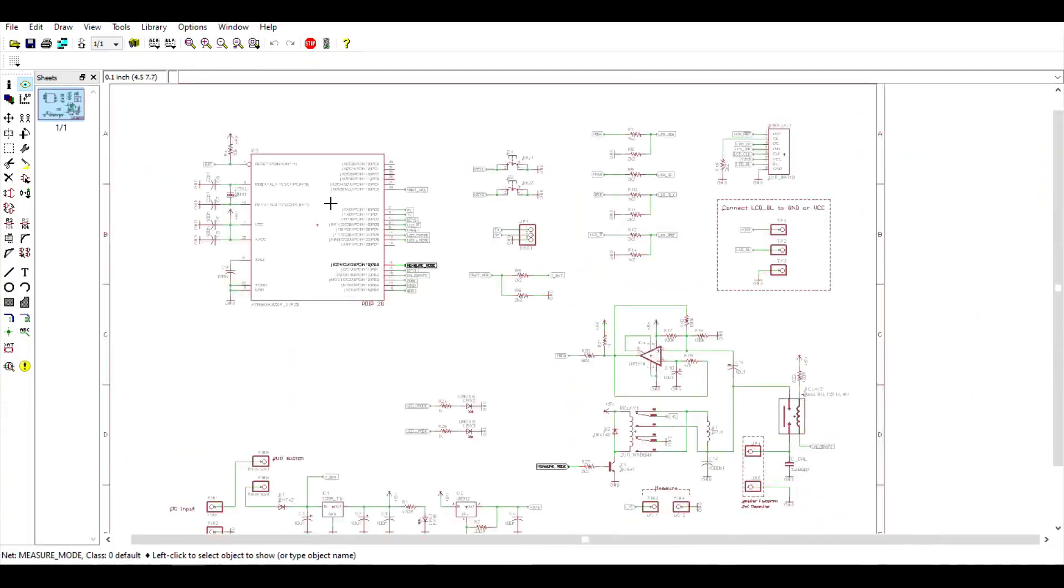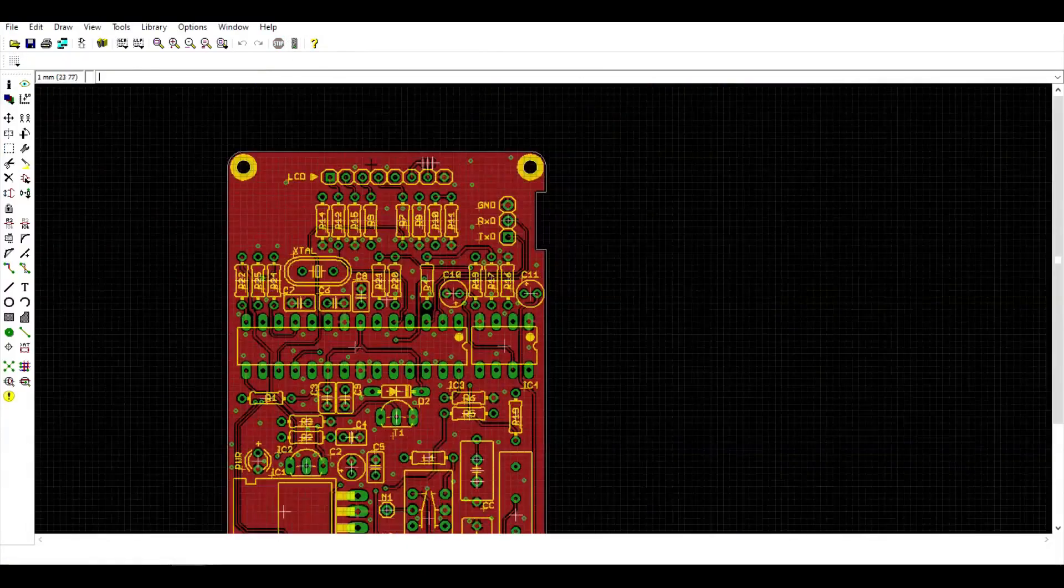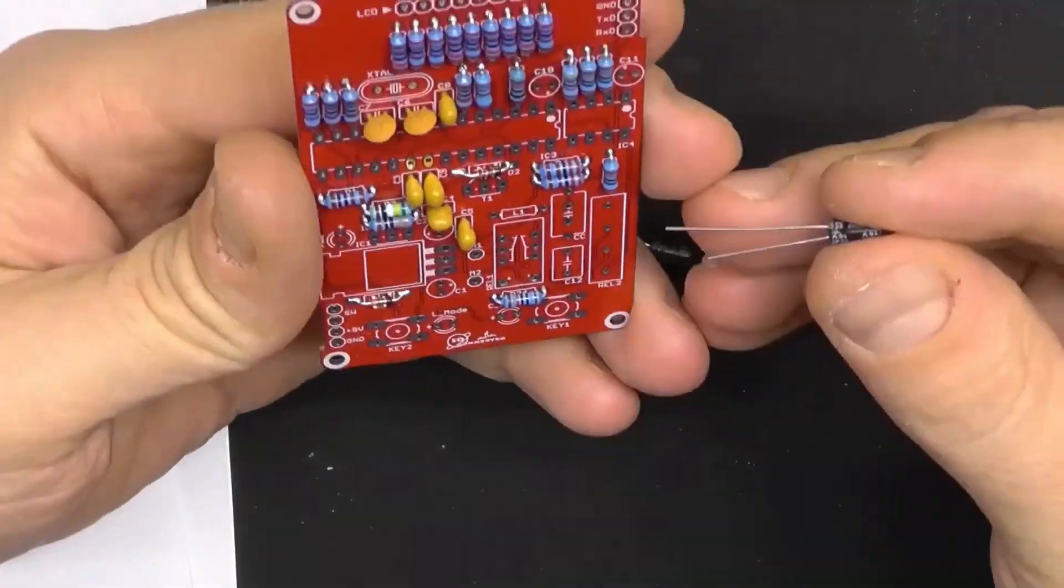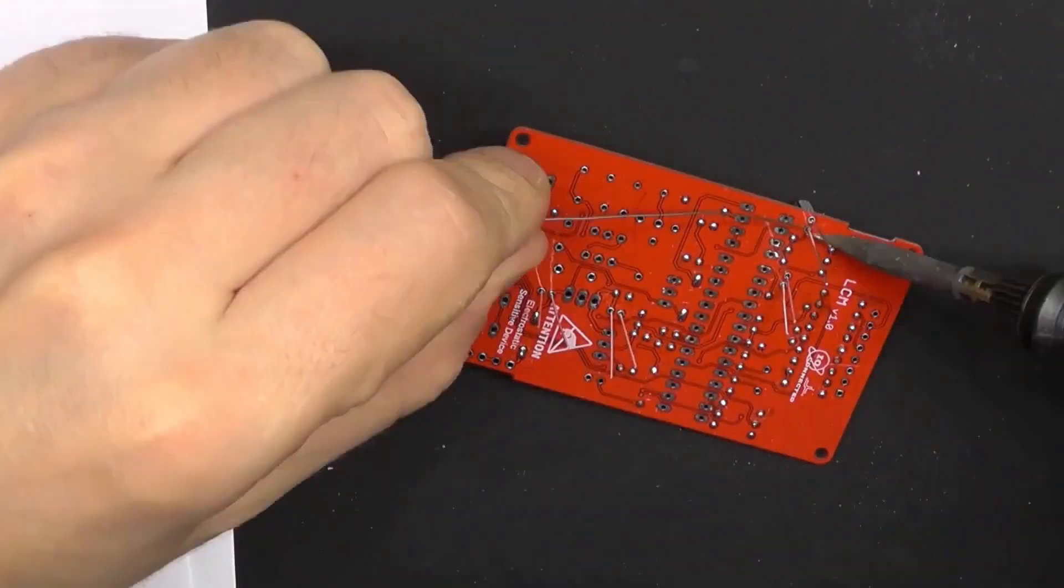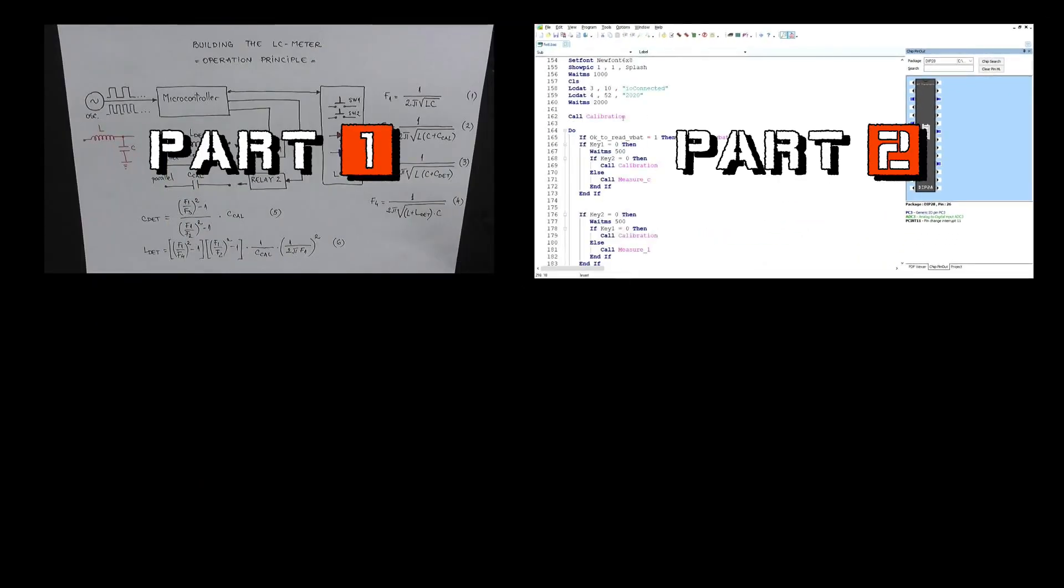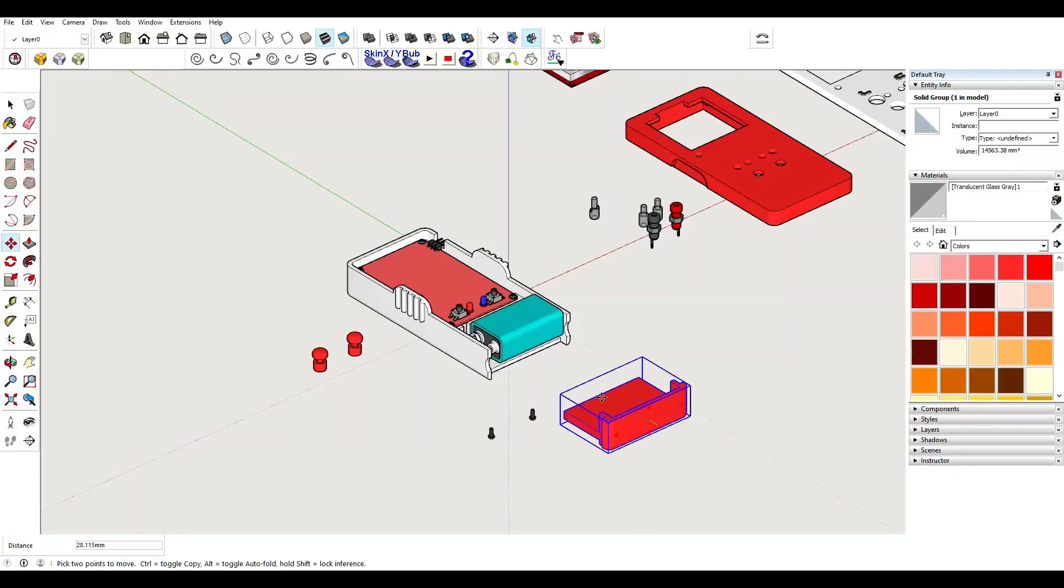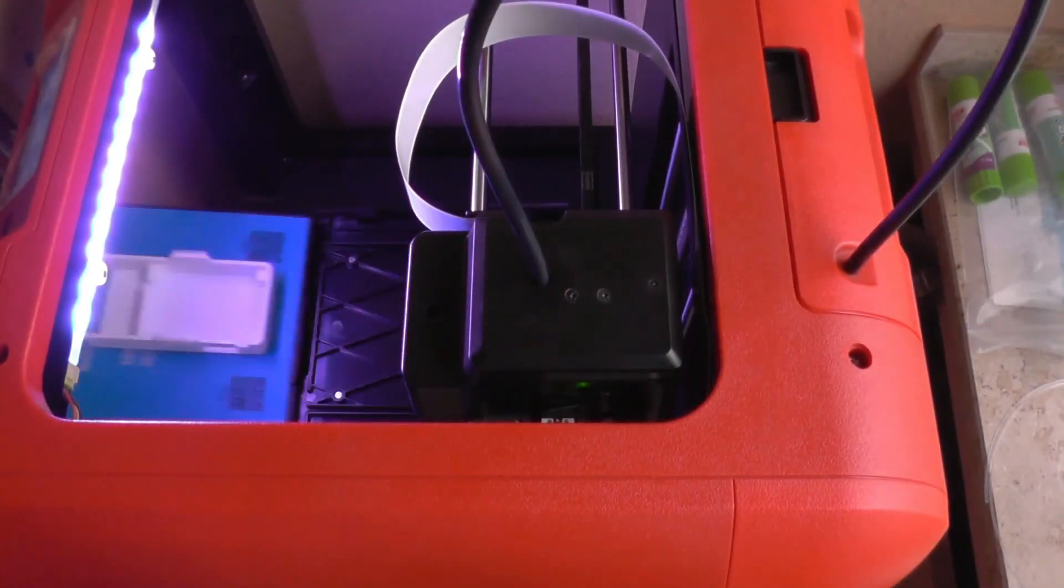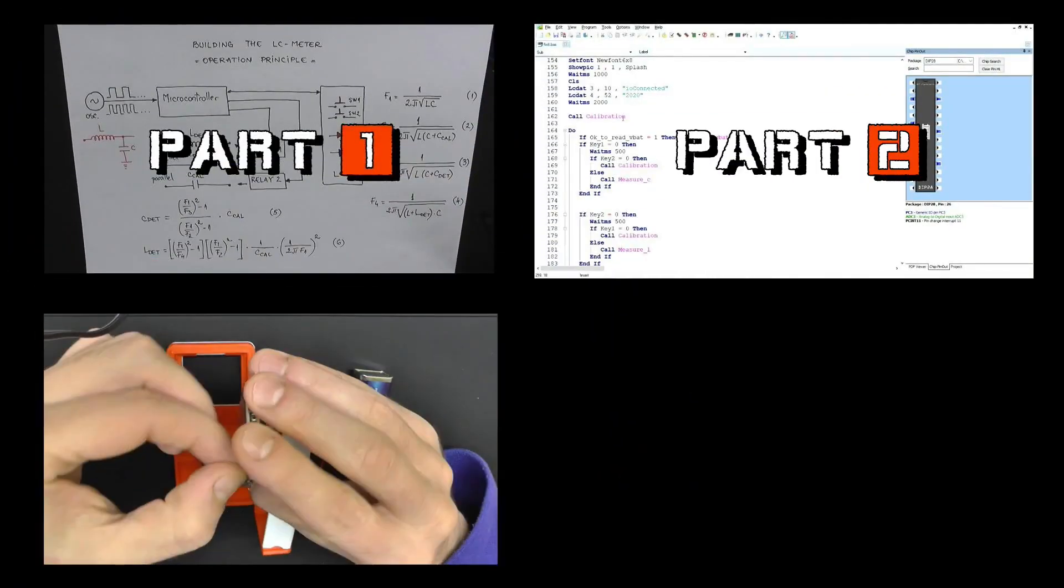In part two, we're going to get into details. We're going to take a look at the schematic and the PCB, then I'm going to solder everything on the PCB, and I'm also going to show you the software for the microcontroller. Part three is going to be about the case, how I 3D modeled everything, and then we're going to start assembling everything.